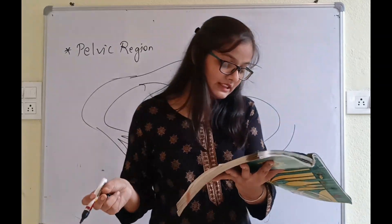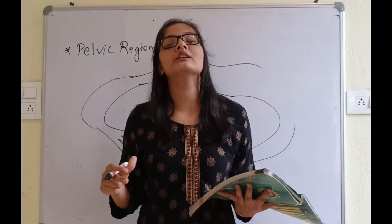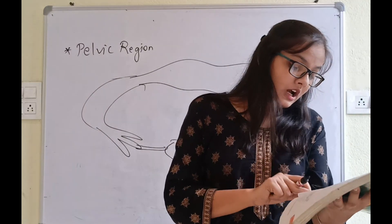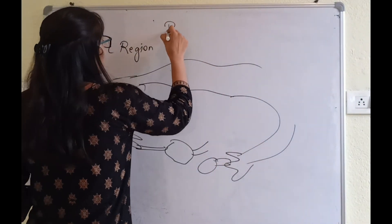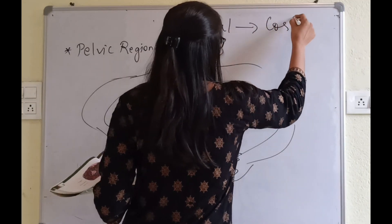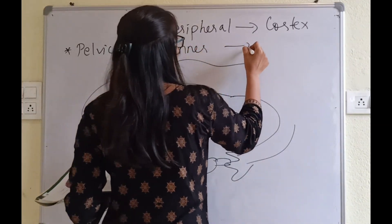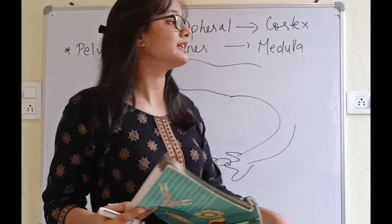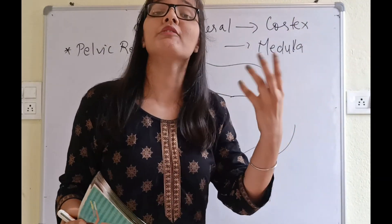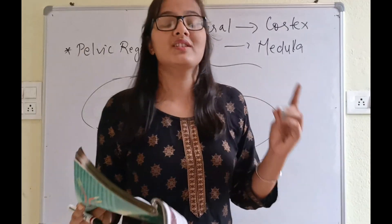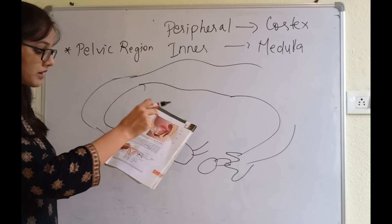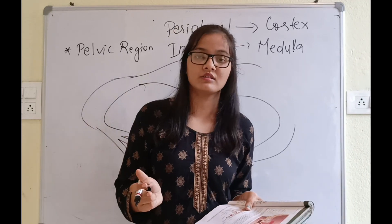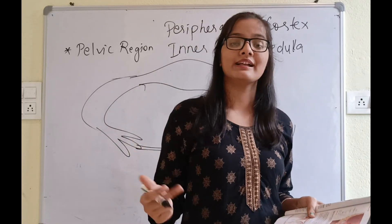I have told you that ovaries are connected by ligament - uterus ligament - and connected to the pelvic region. The ovarian ligament and suspensory ligament. Each ovary is covered by epithelium which encloses the ovarian stroma. The stroma is divided into two zones: the peripheral cortex and the inner medulla. The peripheral cortex contains developing follicles, and the inner medulla contains blood vessels.